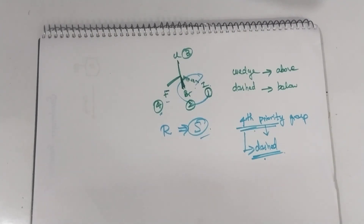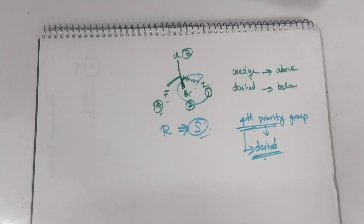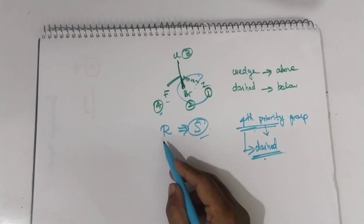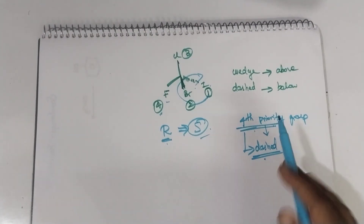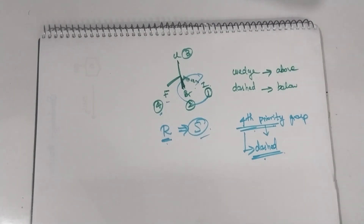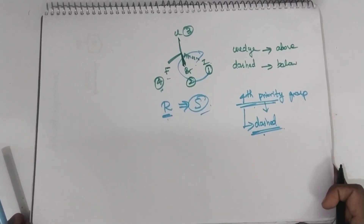This is how you find the configuration — same rules as in Fischer projection. First give the priorities, then rotate and check from 1, 2, 3. After rotation, determine whether the direction is clockwise or anti-clockwise. If it is clockwise, then it is R; if it is anti-clockwise, then it is S. After that, check the fourth priority group. If the fourth priority group is in the dashed position, no need to invert the configuration. If it is not in the dashed position — it may be in the wedge or solid line — you have to invert the configuration. These are all the rules to follow while predicting R and S configuration in flying wedge projection.